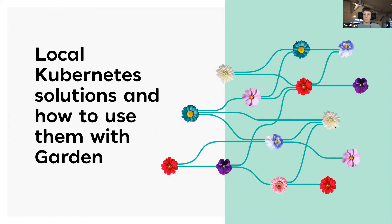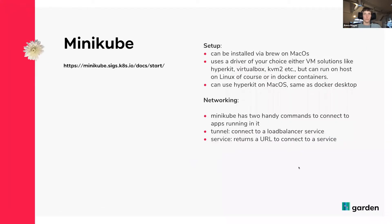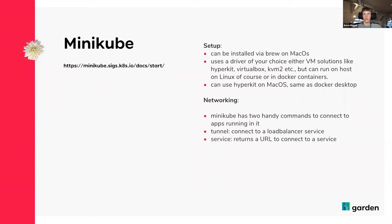The first solution today is minikube. We'll look at a couple of different criteria — the first being how easy the setup is and whether it works on other operating systems than Linux. Minikube can be installed via brew on macOS, can also be installed on Windows, and you can run it on a couple of VMs. On macOS it works quite nicely with HyperKit, which is the same solution Docker Desktop uses.